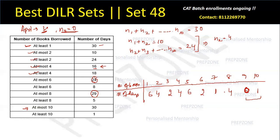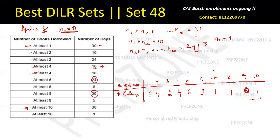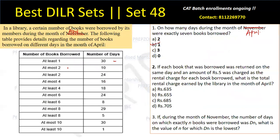Question 1: On how many days during the month of April were exactly 7 books borrowed? Looking at n7 in our table — it is 1. The answer is 1 day.